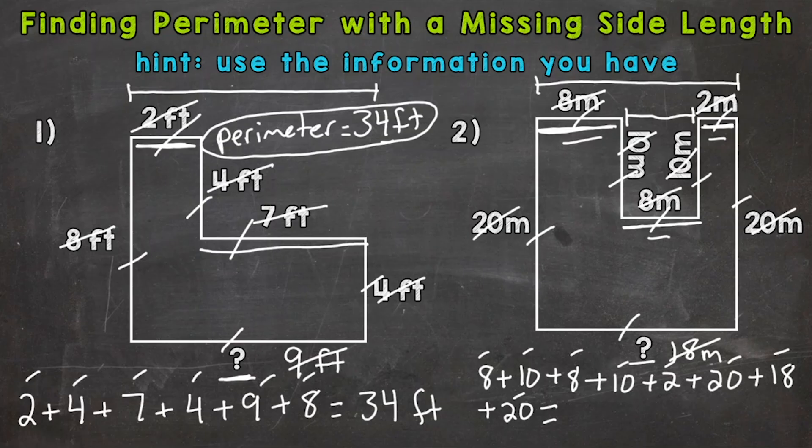So eight plus 10 is 18, plus eight is 26, plus 10 is 36, plus two is 38, plus 20 is 58, plus 18 is going to be 76, plus 20 gives us 96. And that is meters. So perimeter equals 96 meters.